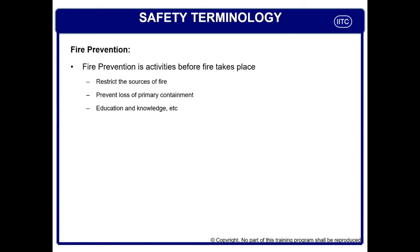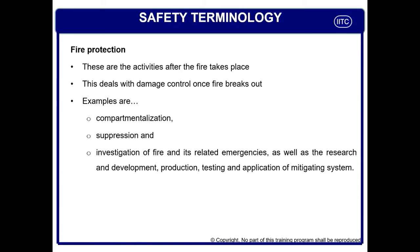There are two terminologies used in fire. One is fire prevention and the second is fire protection. Fire prevention covers activities which come before fire takes place — like restricting fire sources, preventing loss of primary containment, and education. Fire protection means activities that come after fire takes place. Once fire happens, what actions ensure there is no major damage — for example, compartmentation of combustible material, suppression systems to remove oxygen, fire investigation, identifying root causes, and implementing fire control recommendations. These are fire protection measures.